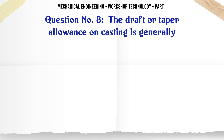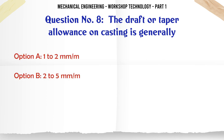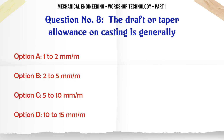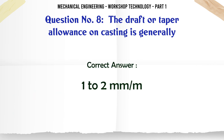The draft or taper allowance on casting is generally: A. 1–2 mm. B. 2–5 mm. C. 5–10 mm. D. 10–15 mm. The correct answer is: 1–2 mm.